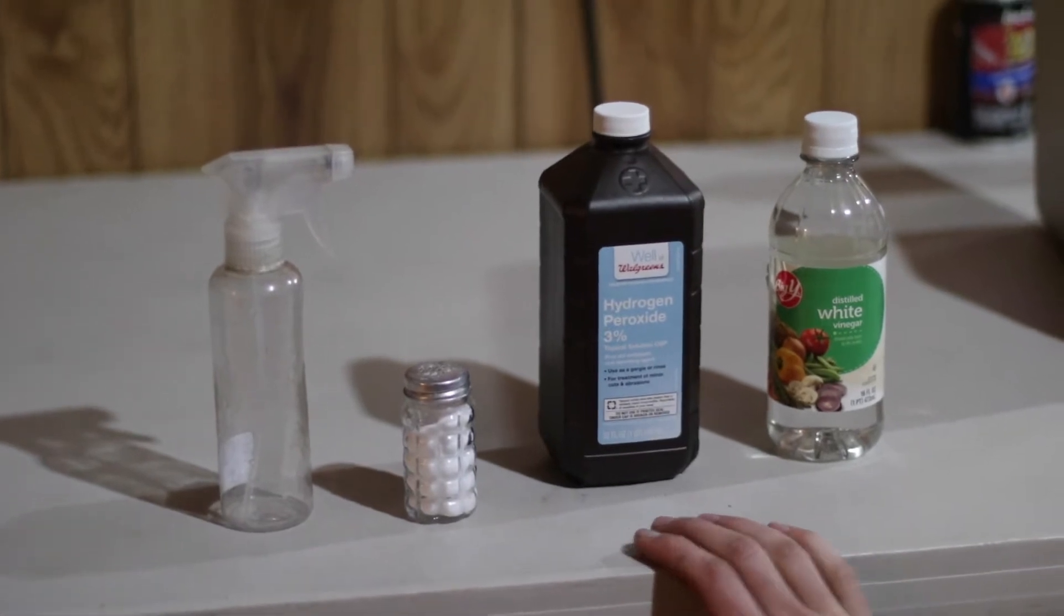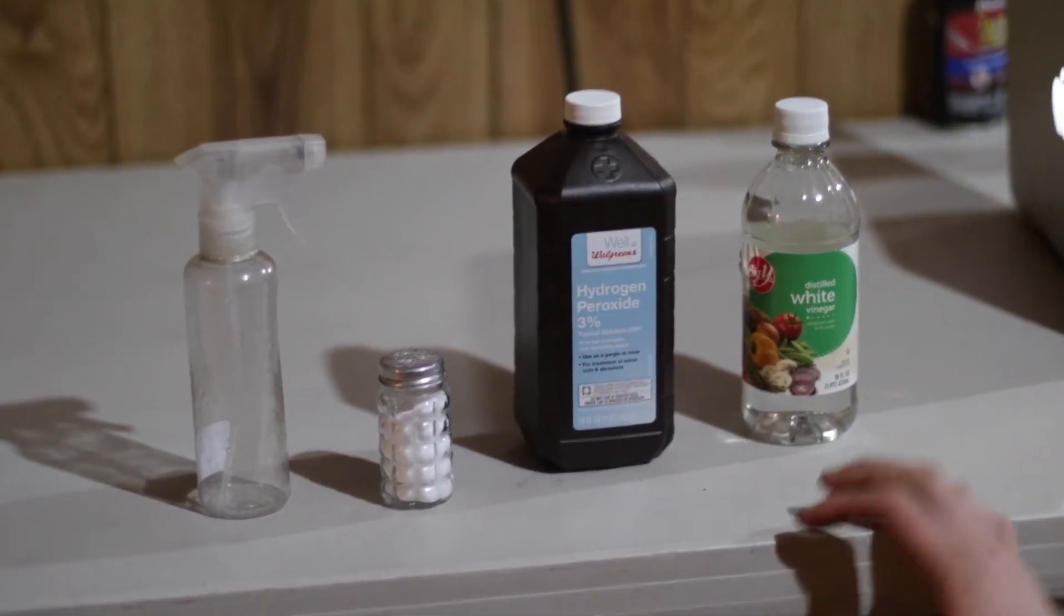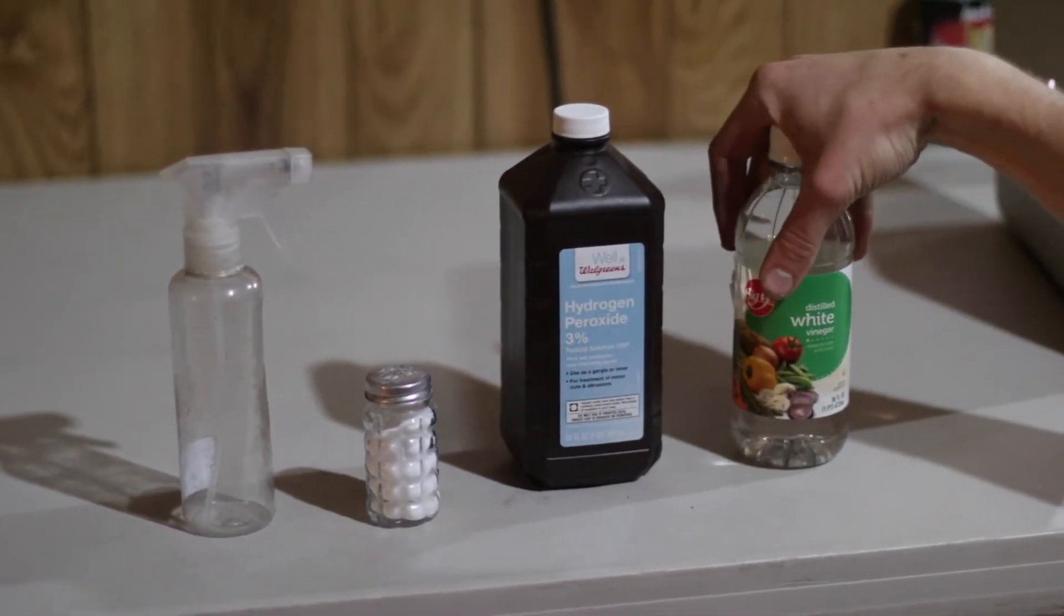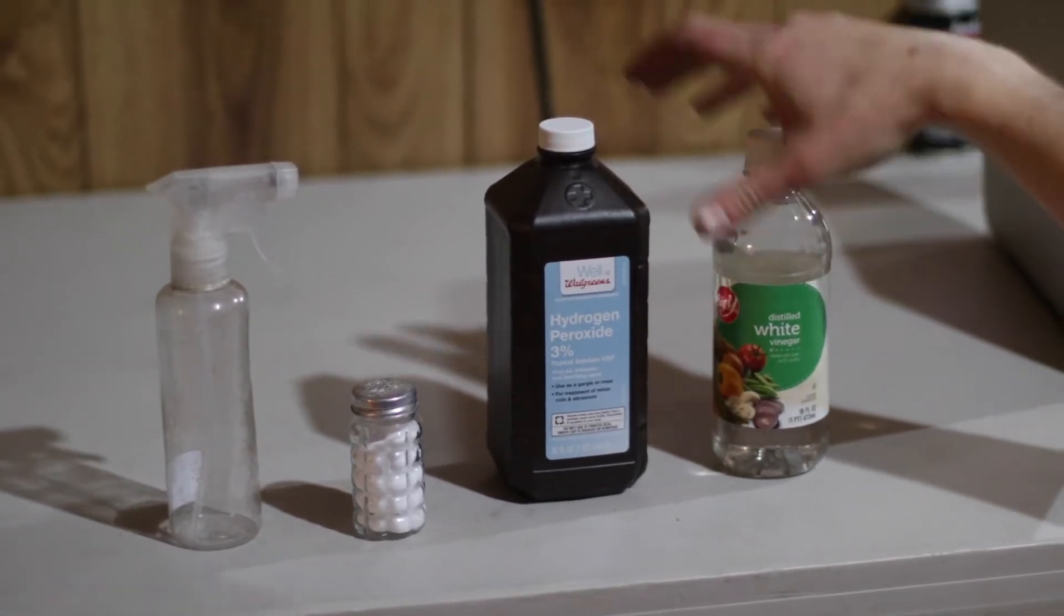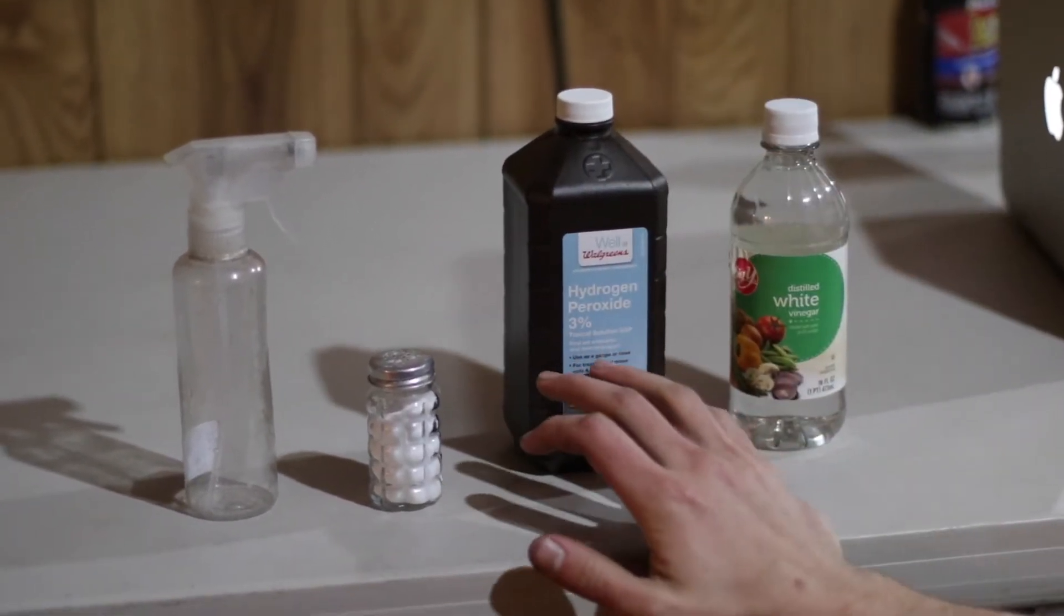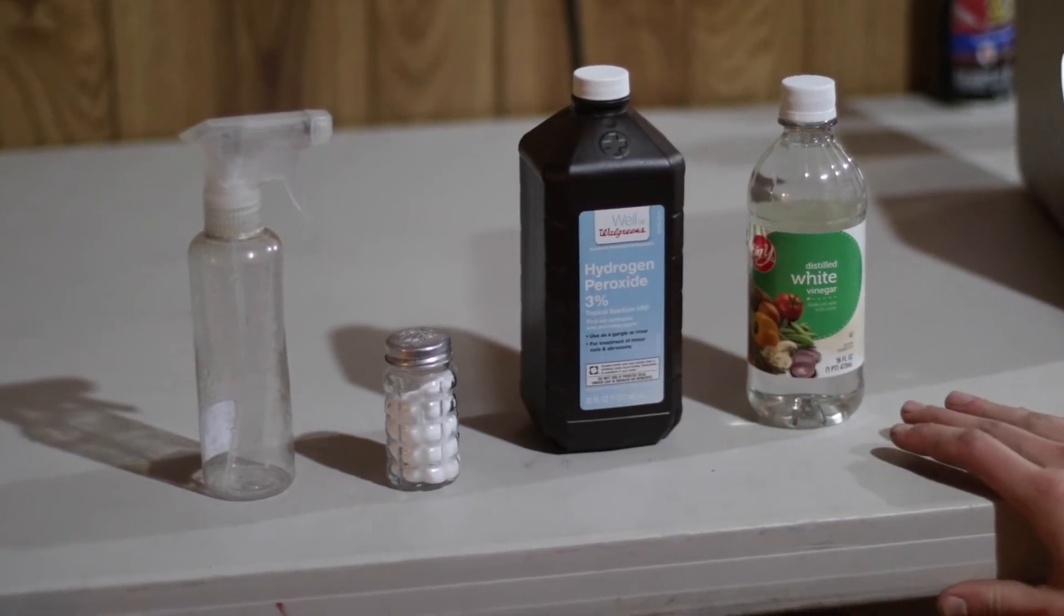We have salt, hydrogen peroxide, and distilled vinegar. The first step is to spray the vinegar onto the metal, and then after that we let it sit for a little while. And then we mix it—doesn't really matter the mixture, right? No.